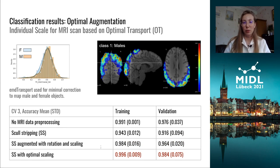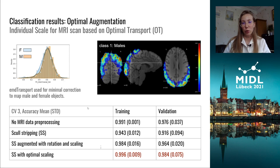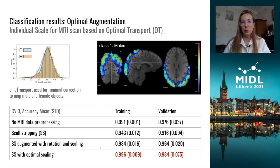Male subjects were scaled to map to female distributions and vice versa, based on brain sizes using optimal transport with earth mover's distance. This approach not only led to the interpretation we aimed for — focused on brain structure — but also produced an accuracy boost.